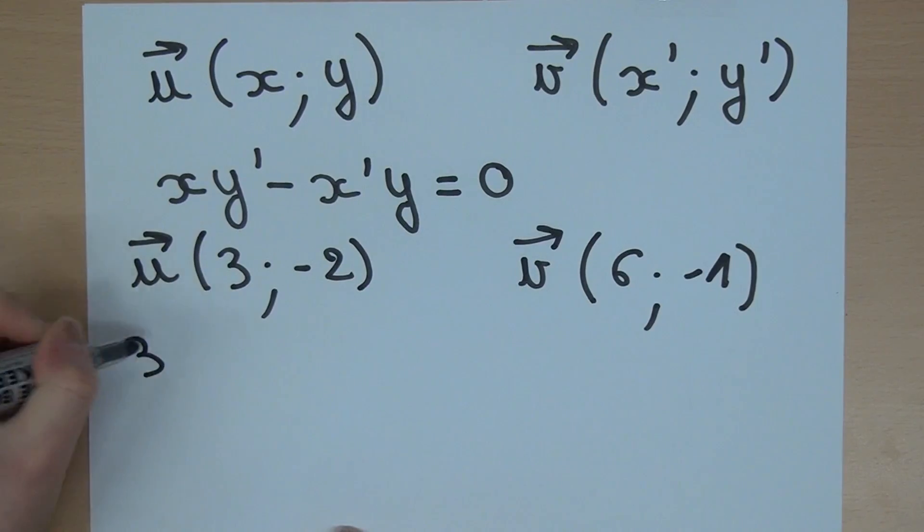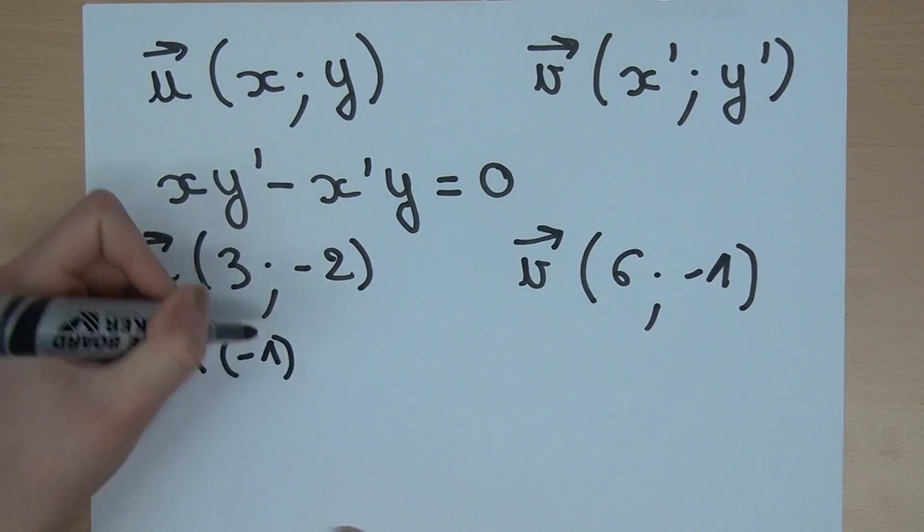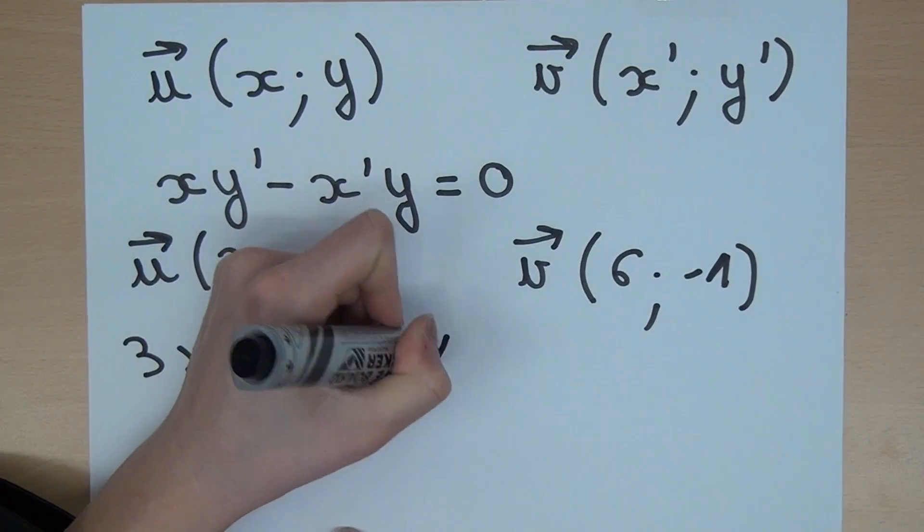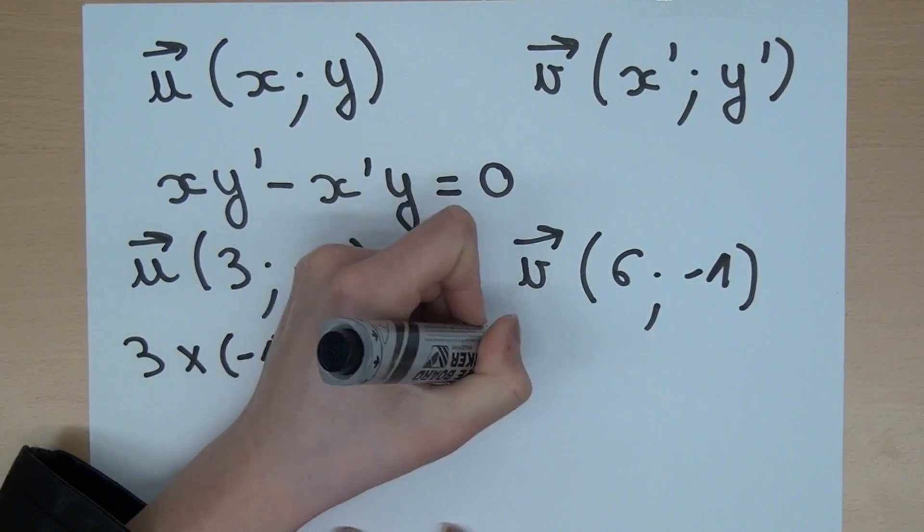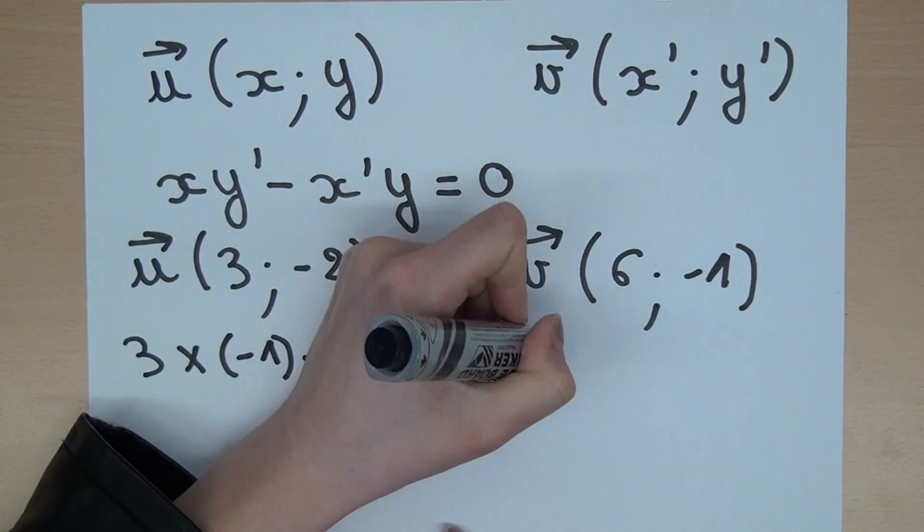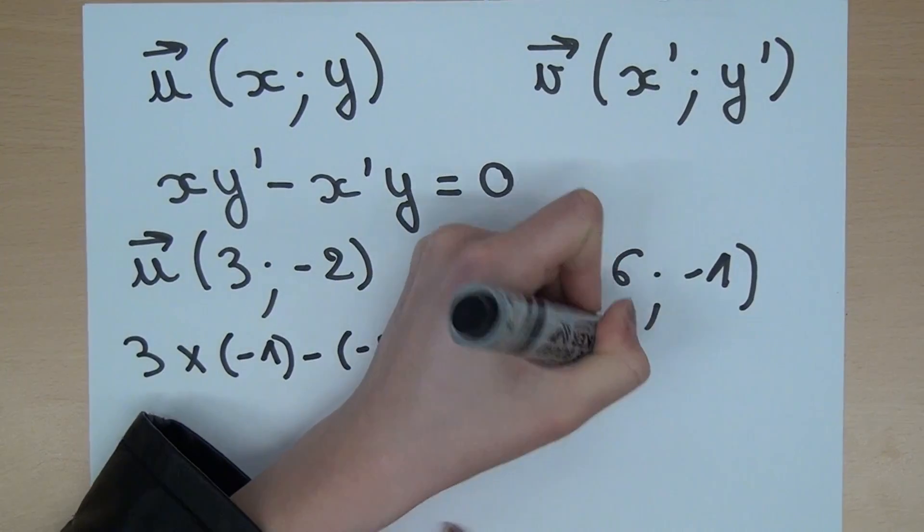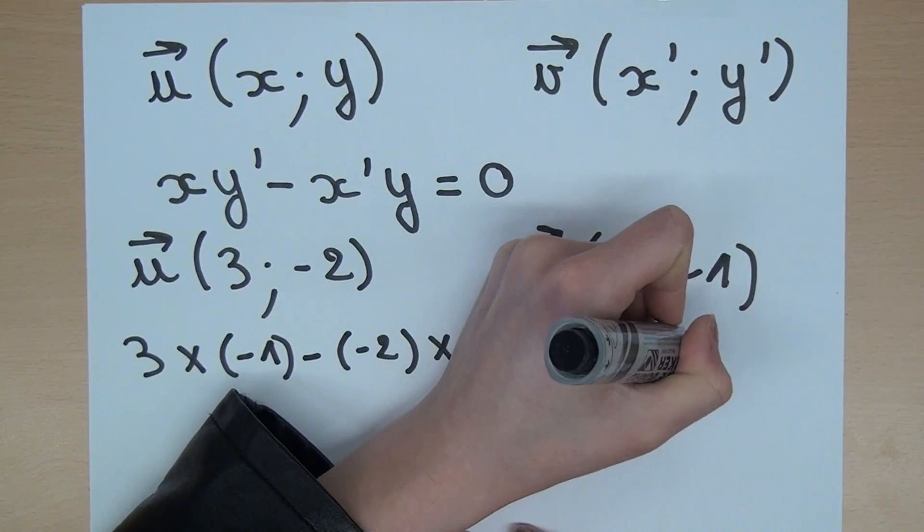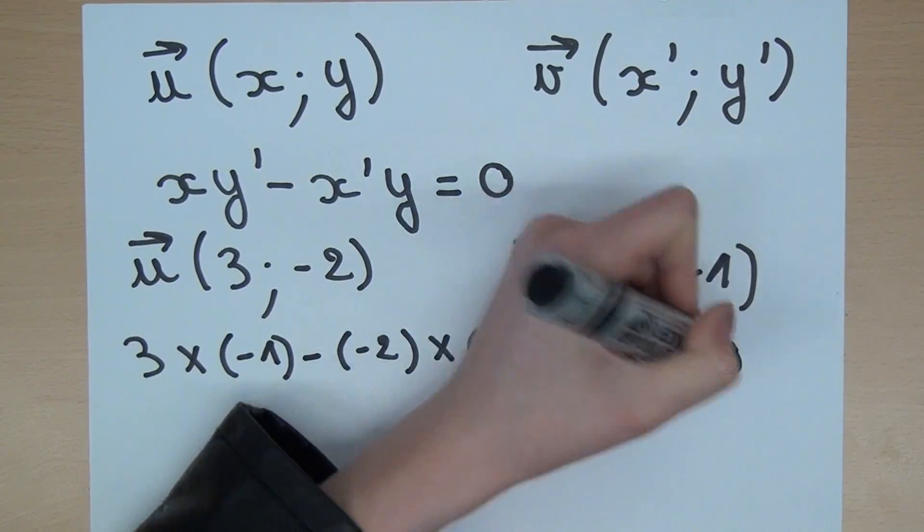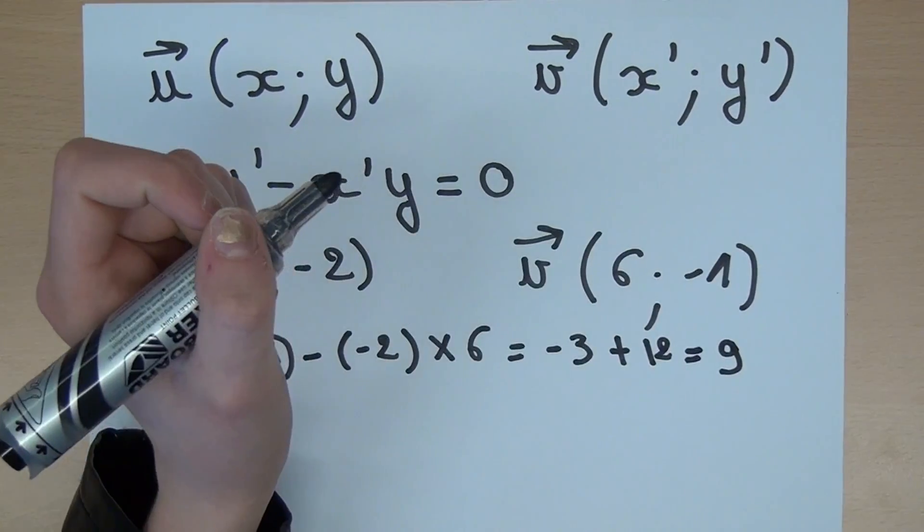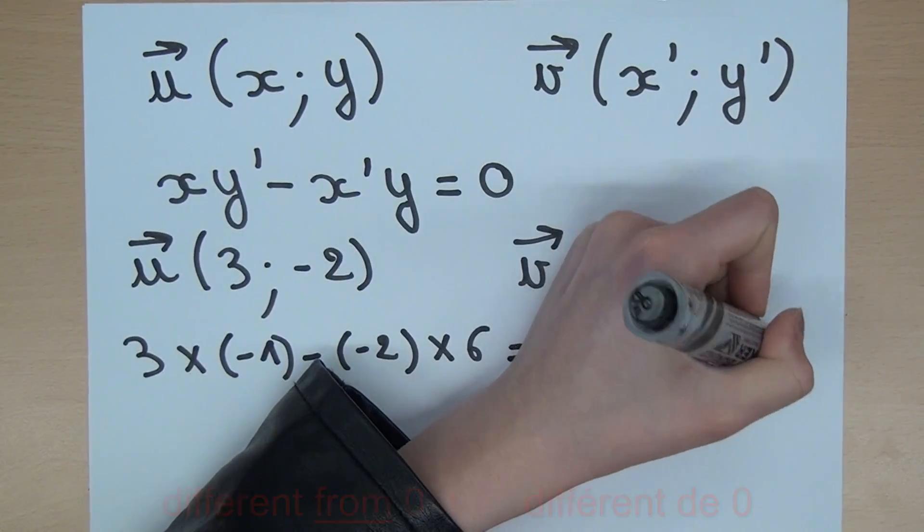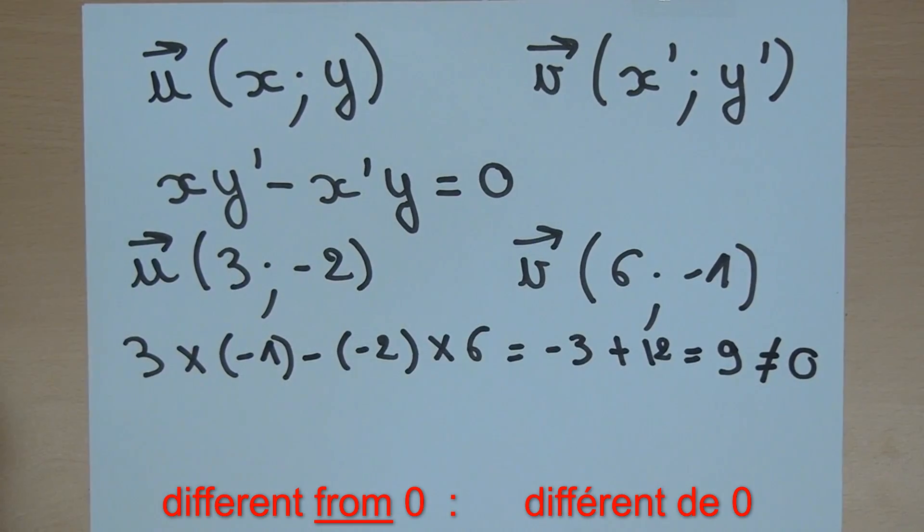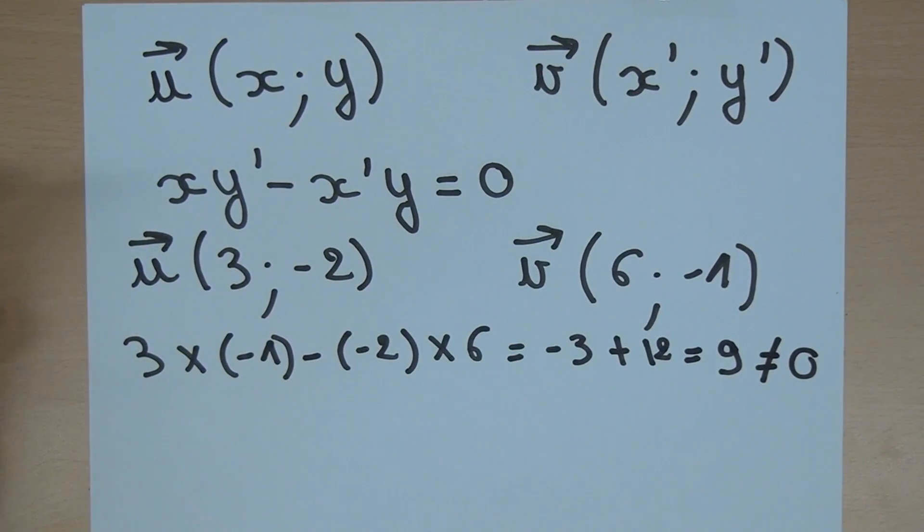So, 3 multiplied by -1 minus -2 multiplied by 6 equals -3 plus 12 and equals 9. So the result is different from 0, so the two vectors are not collinear. We have another example.